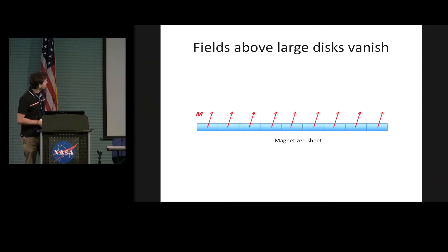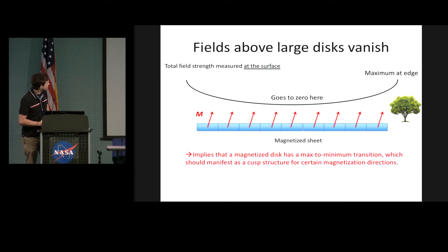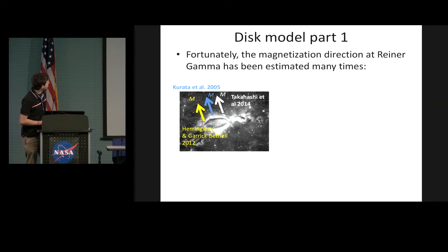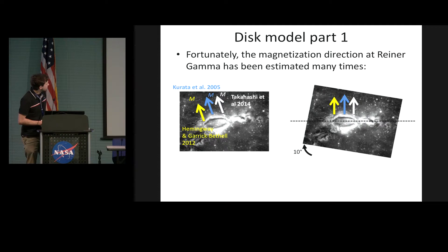I came up with the idea that it could actually be a magnetized disk. I'm going to introduce what I think may be going on as an elliptical magnetized disk. Previously, many people have tried to figure out the magnetization direction at Reiner Gamma. All these papers have estimated the magnetization to be along the vectors you see here. Interestingly, I noticed these are all perpendicular to the symmetry axis of Reiner Gamma — a funny coincidence and, I think, an important clue to how this thing formed.